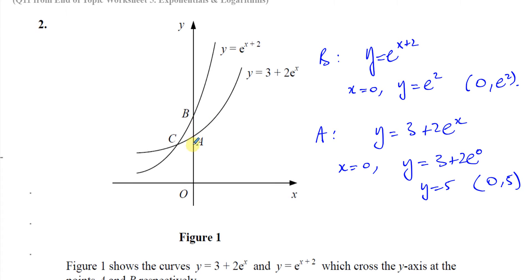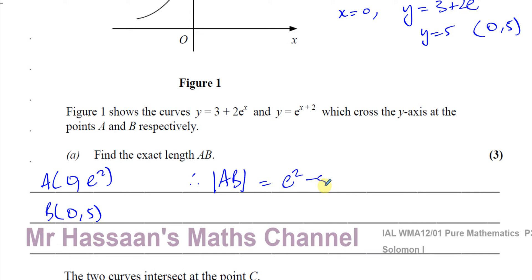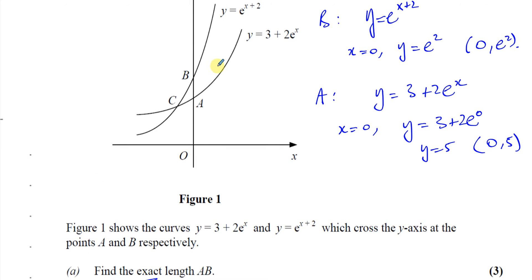We need to find the distance AB, which is the difference between the y-coordinates of the two points. We know A is the point (0, e²) and B is the point (0, 5). Therefore the length AB is going to be e squared minus 5. They want the exact length, so we leave it in this form — we don't write the decimal equivalent. We leave it as e squared minus 5.